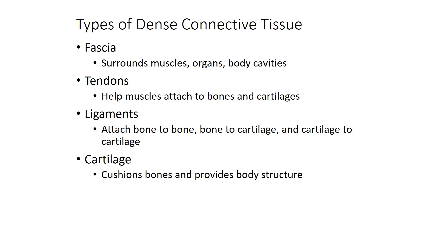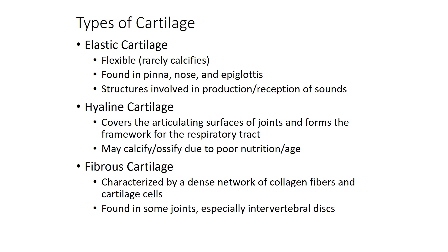Cartilage itself is a dense connective tissue. Cartilage provides cushioning to bones and is also stiff enough to provide some body structure. There are different types of cartilage from more elastic cartilage, like that found in your pinna — the external part of the ear — in your nose, or in the epiglottis, which is a structure in the back of the throat at the base of the tongue important for swallowing. We also have somewhat less elastic cartilage called hyaline cartilage that generally lines the joints where different bones come together.